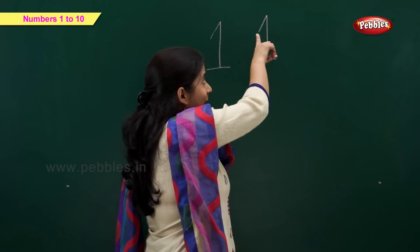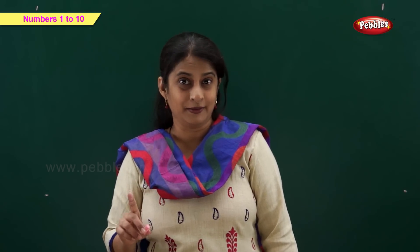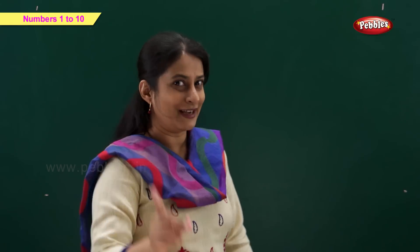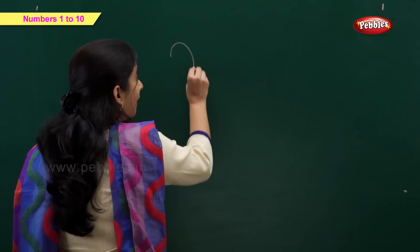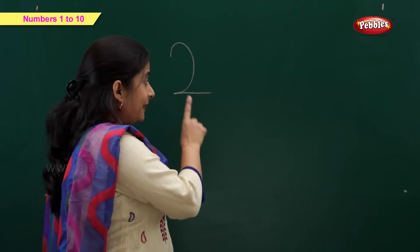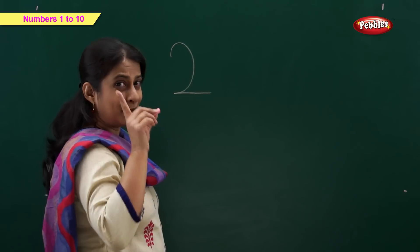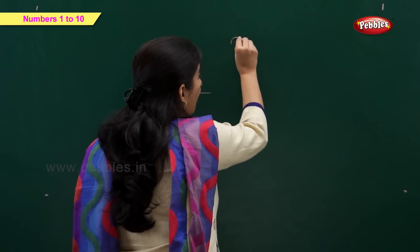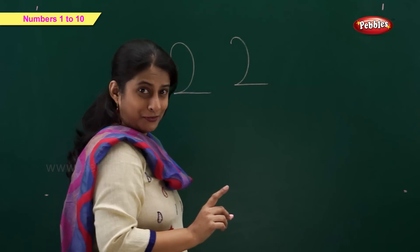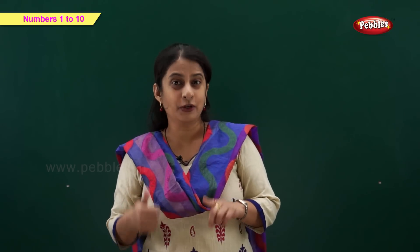Yes, it's also known as cross line. Okay, now you've seen number 1. Now we'll write number 2. A curve and a slanting line makes number 2. So far, we've learned number 1 and number 2.